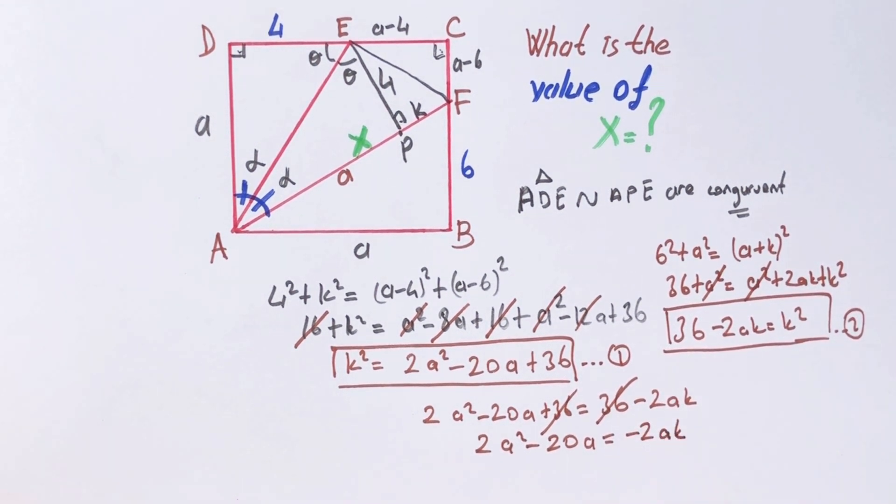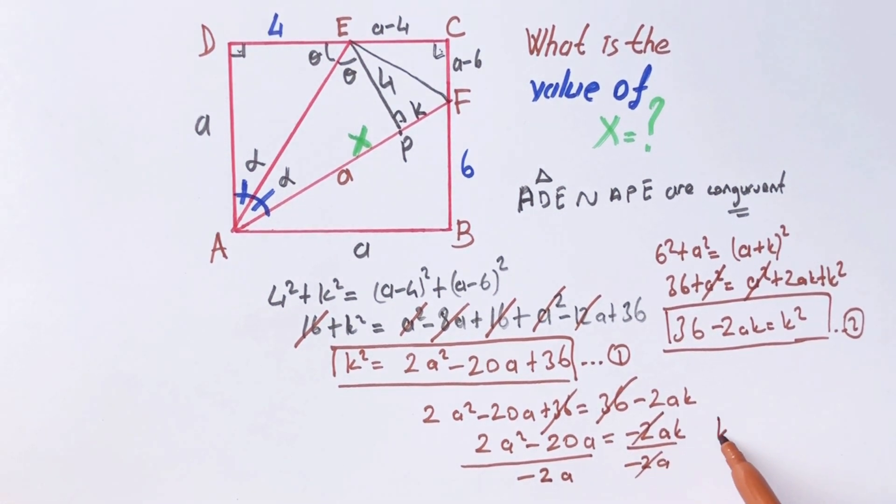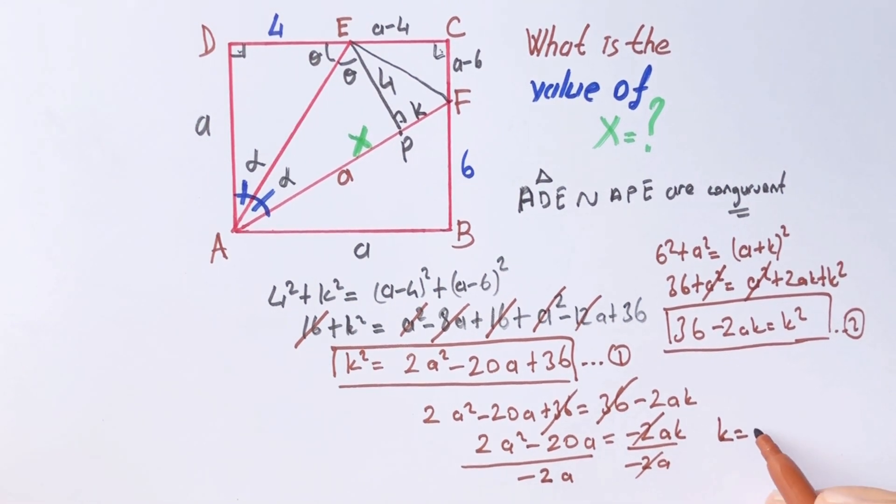So it equals 2ak. Let's divide both sides of the equations by minus 2a. K is going to be minus a plus 10.